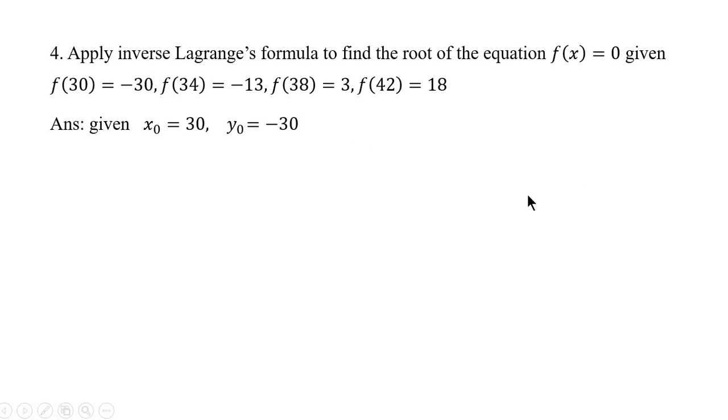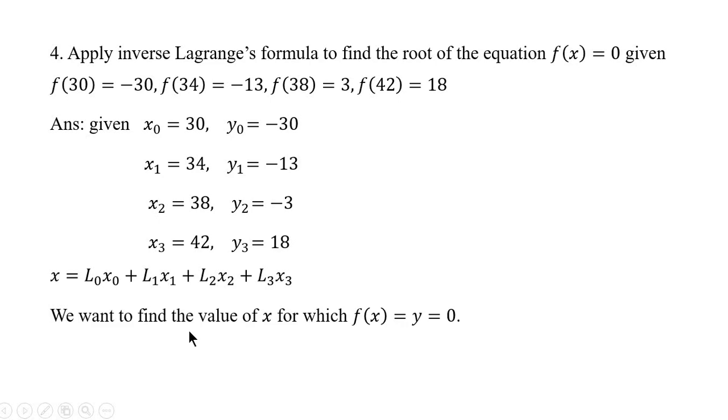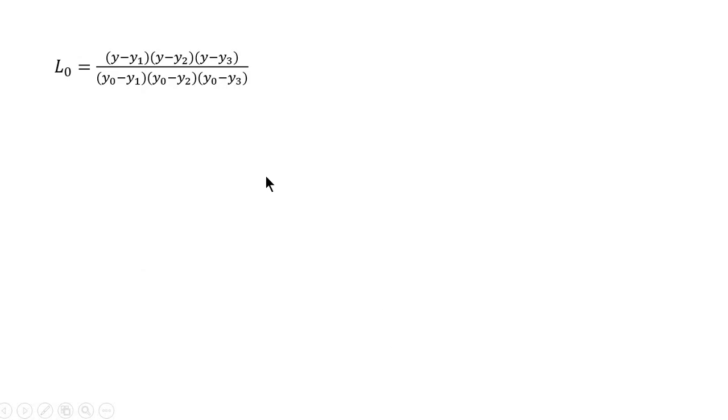And let us name these values as x0, y0, x1, y1, x2, y2, x3, y3. And this is the Lagrange's inverse polynomial. We have to find out the value of x for which y equal to 0. Put y equal to 0 in inverse Lagrange's formula. You know, L0 is obtained by replacing x by y in the formula. We know the value of y is 0. Substitute y1, y2, y3 and y0.